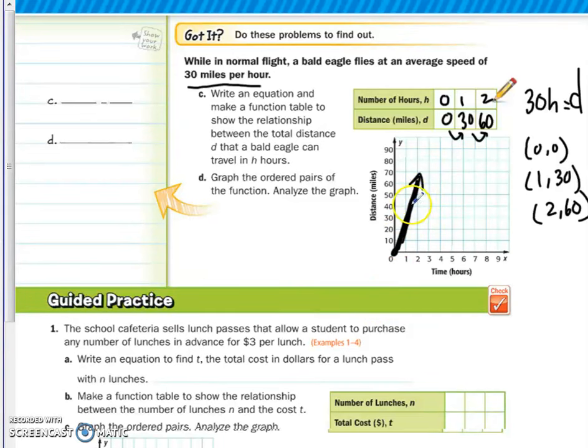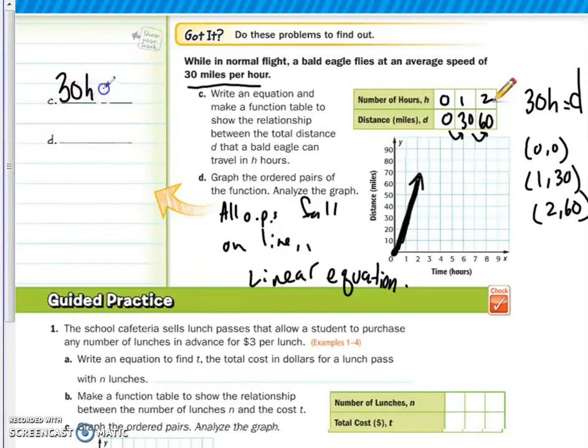Now, when we analyze the graph, we can just say that all ordered pairs fall on line. And you can also state that it is a linear equation because there's a constant increase of 30 per hour. And the equation is 30H equals D, 30 miles per hour.